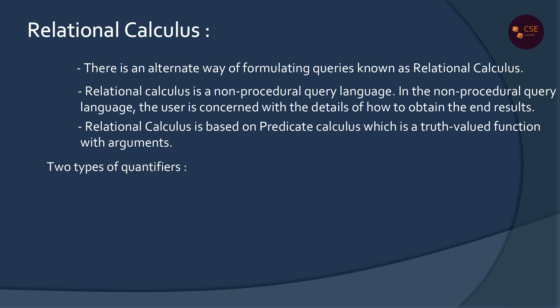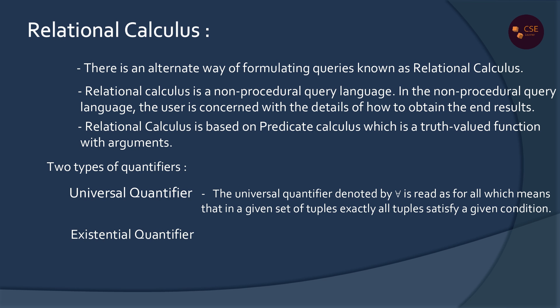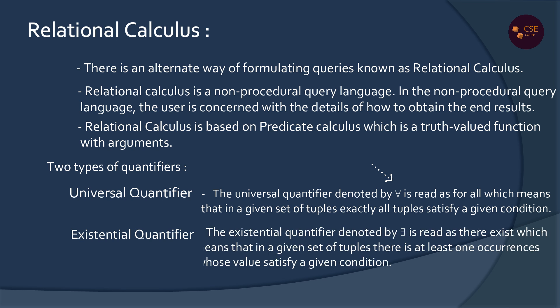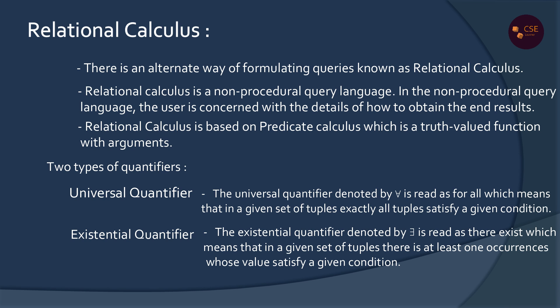Relational calculus uses two types of quantifiers: the universal quantifier and the existential quantifier. The universal quantifier means 'for all' — meaning all the tuples will satisfy all the conditions. The existential quantifier means 'there exists' — meaning at least one tuple will satisfy the condition.